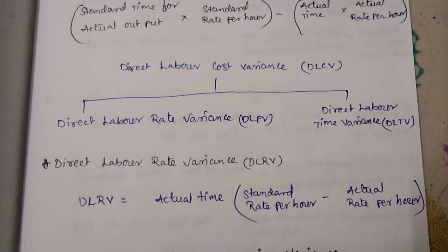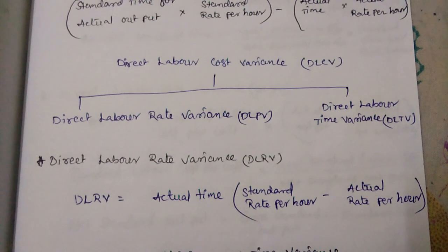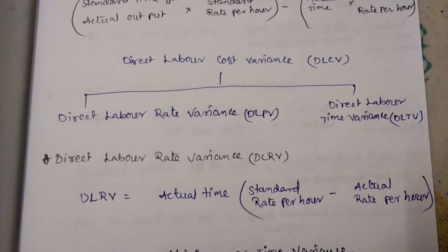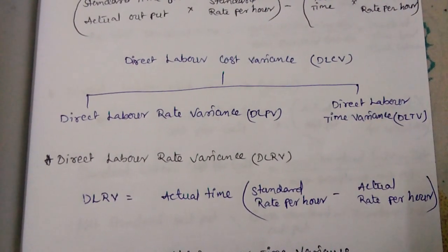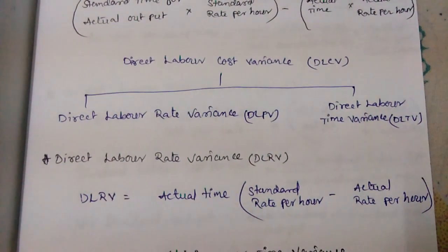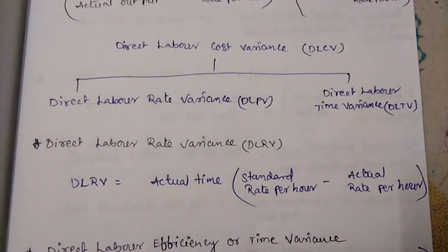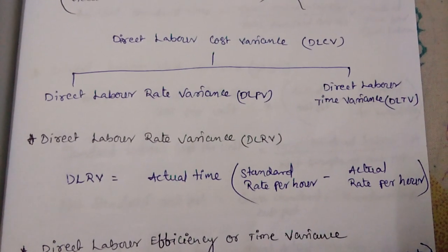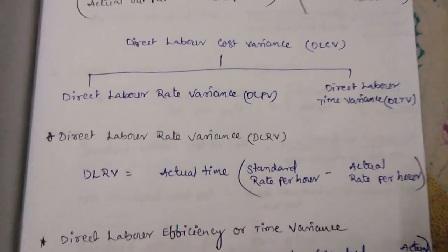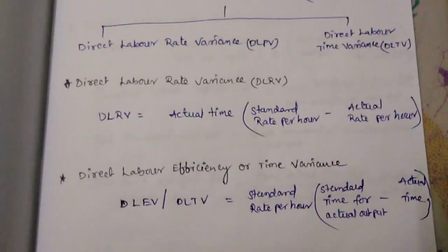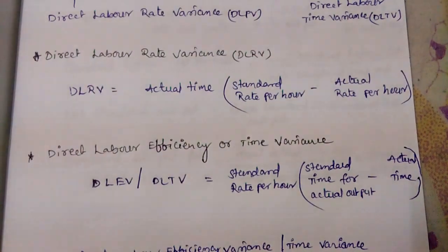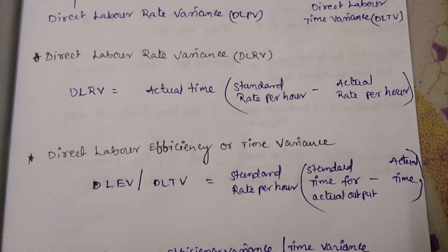Direct Labor Cost Variance is divided into two parts: Direct Labor Rate Variance (DLRV) and Direct Labor Time Variance (DLTV). Direct Labor Rate Variance equals actual time multiplied by the difference between standard rate per hour and actual rate per hour.